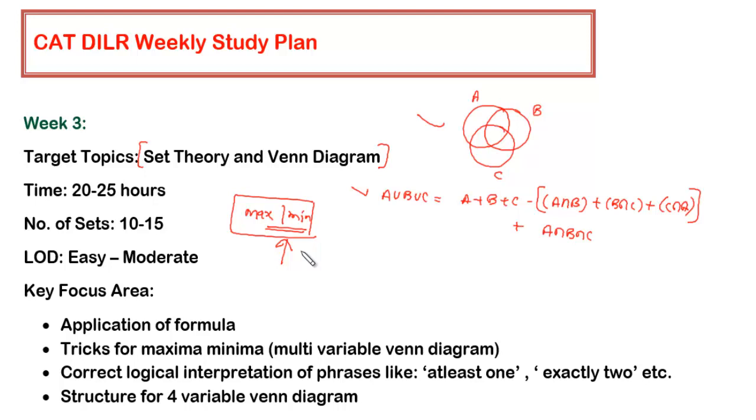You have to focus on 10 to 15 sets. The time required would remain the same - if you want to do it in depth, you have to give at least 20 to 25 hours this week. The number of sets would be 10 to 15, and the LOD should be easy to moderate. There are a couple of difficult sets available in set theory which are very difficult, so hold those sets for a while. Once you're thorough with all three or four varieties from Venn diagrams, we'll discuss difficult sets in the live session.